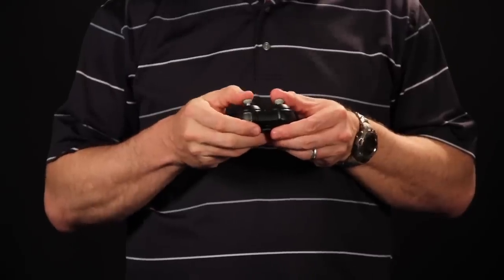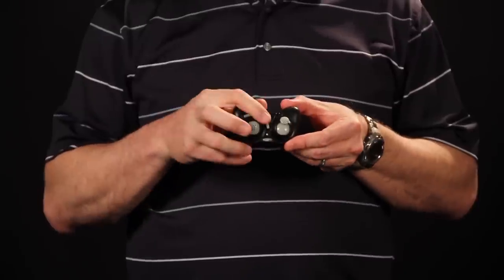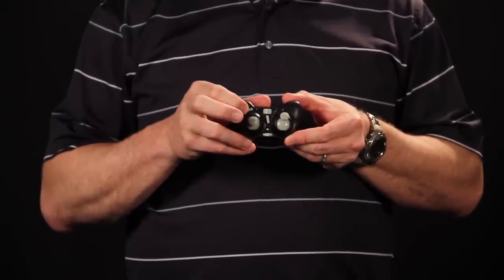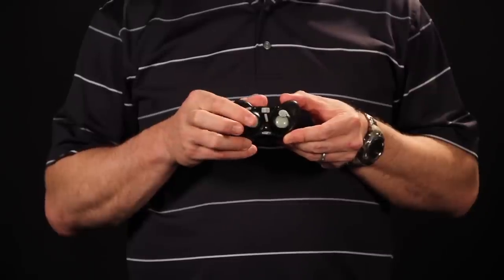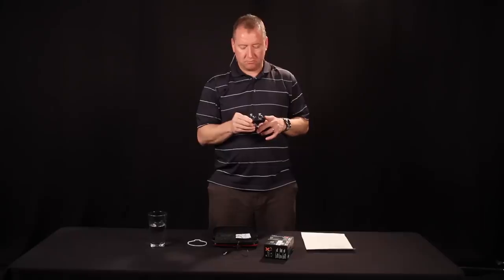A couple more features about the remote. It does have left right and front back trim. It does not have a yaw trim and it does not have a throttle trim but it's pretty good for the size.